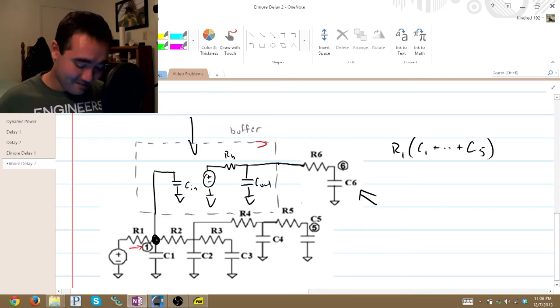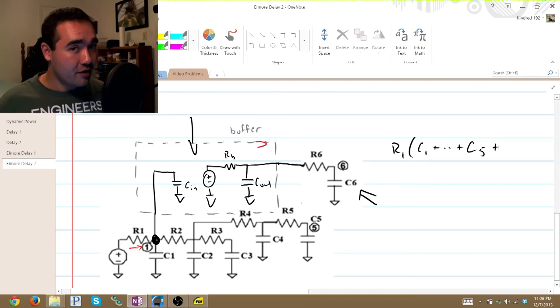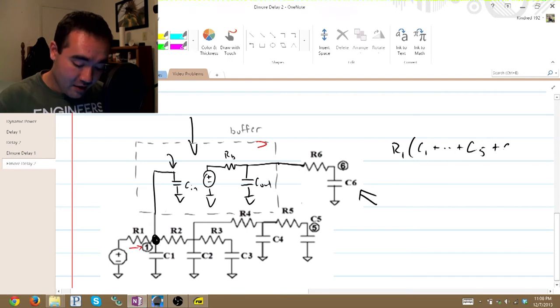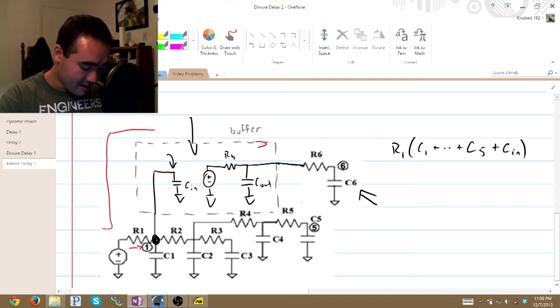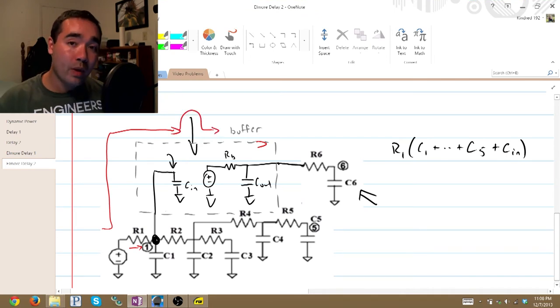And we also have one other capacitor to consider, Cn, that is also now downstream from that resistor. So that's that expression. We continue along our propagation path. We get to the next half of the buffer. Remember, we hit RB.